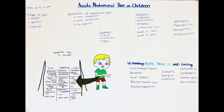Intussusception is when one part of the intestine slides over or into another adjacent part, and it most commonly happens in the ileocecal region. The list of differential diagnoses for acute abdominal pain in children is long, ranging from self-limiting to life-threatening diseases, including gastroenteritis, lymphadenitis, and cecal diverticulitis as self-limiting examples, and life-threatening ones such as pancreatitis and rupture of an aortic aneurysm.